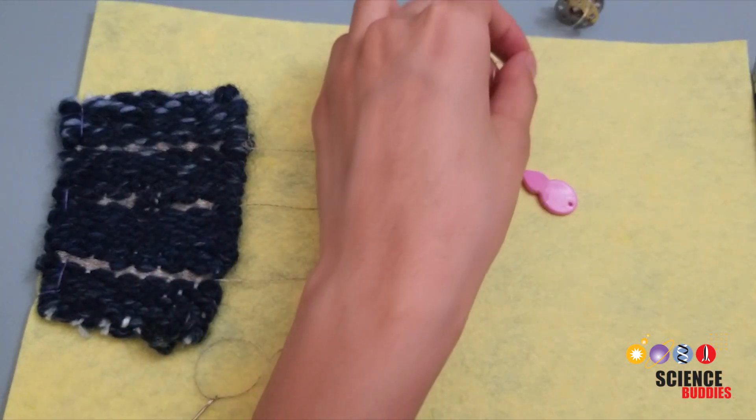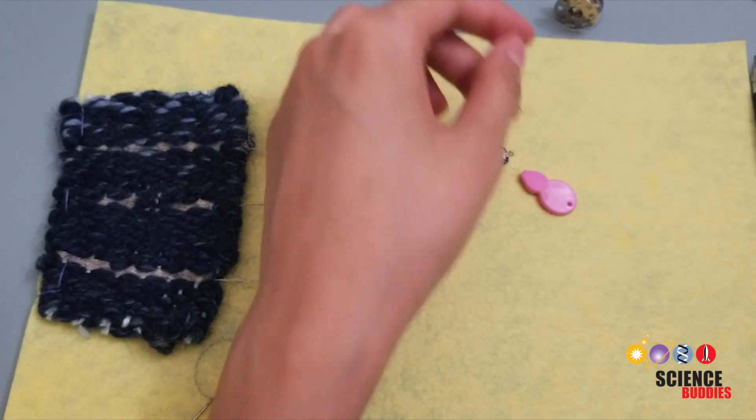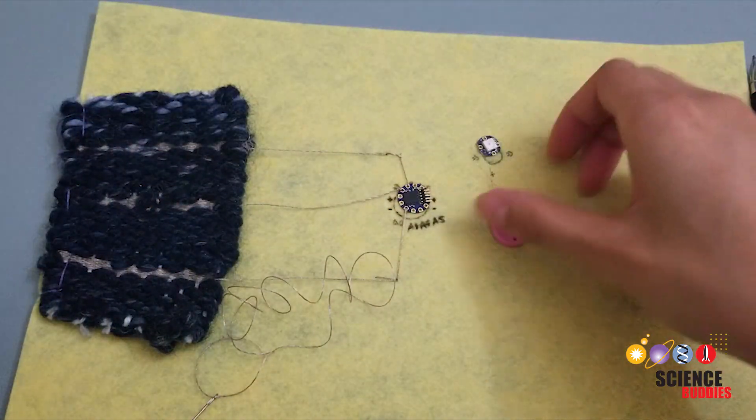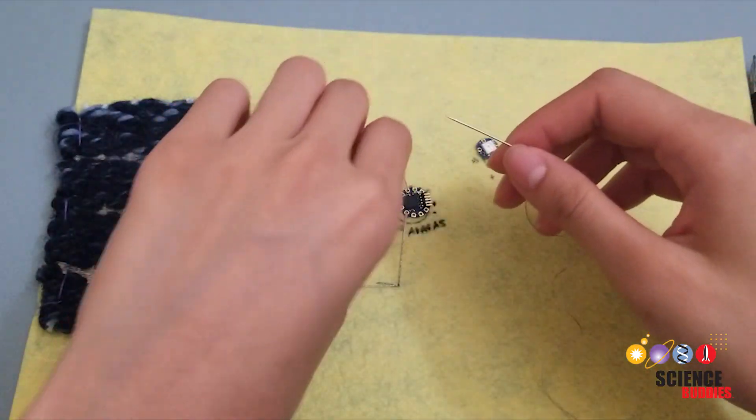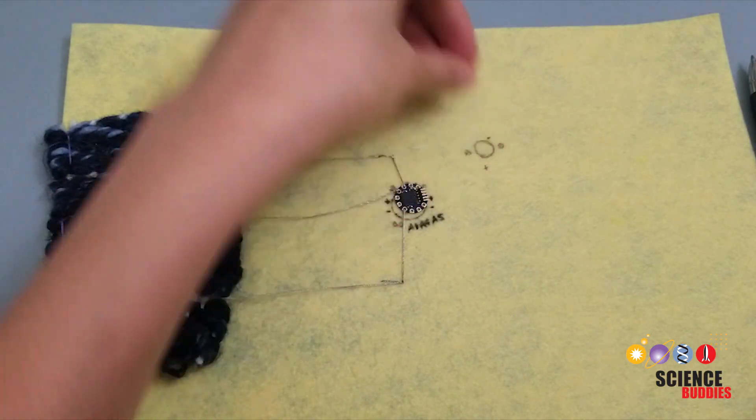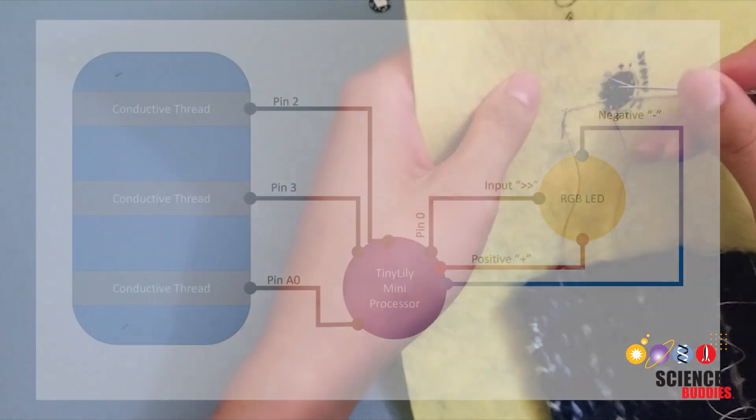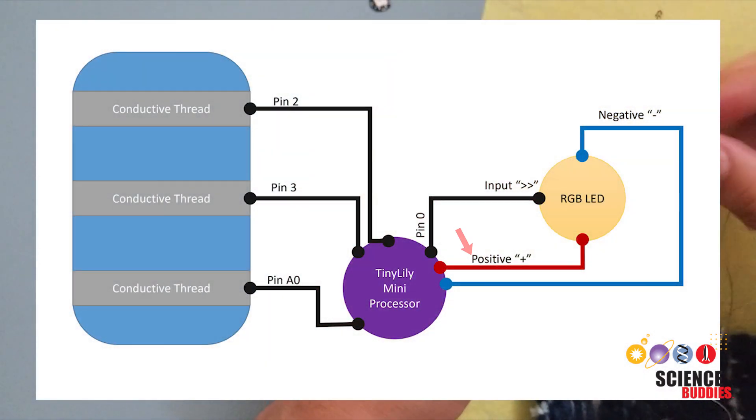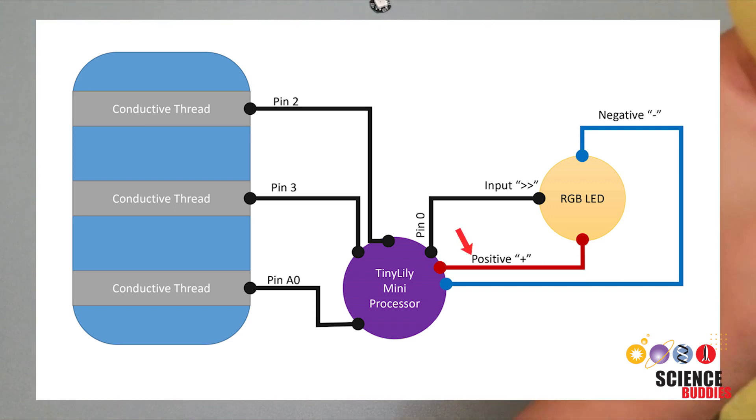If your conductive thread is too short, you can connect extra conductive thread to your current conductive thread as long as the two threads are touching at one point. Now, sew an RGB LED to the same clothing piece. Make the following connections with conductive thread. Connect the positive pin, denoted as a plus sign, on the Tiny Lily to the positive pin on the LED board. Connect the negative pin, denoted as a minus sign, on the Tiny Lily to the negative pin on the LED board. Connect the zero pin on the Tiny Lily to the pin with the arrow pointing into the LED board.